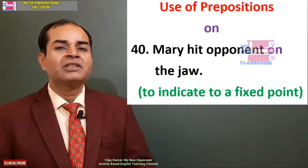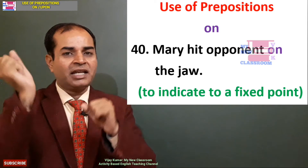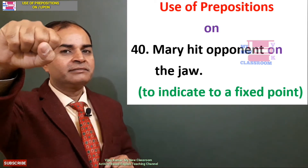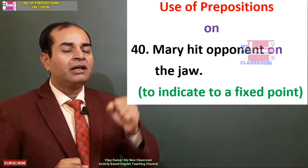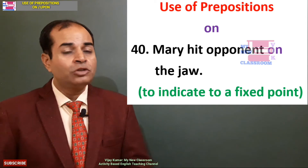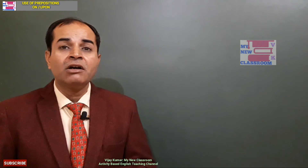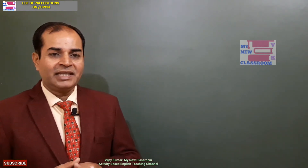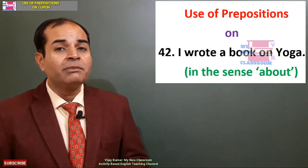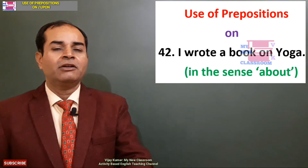And where else is 'on' used? To indicate a fixed point — Mary Kom, the boxer, hit the opponent on the jaw. To show a position or movement of an object or person — baby is crawling on the floor. Or in the sense of 'about' — I wrote a book on yoga. So here also 'on' is used. These were the uses of 'on'.